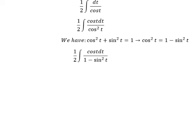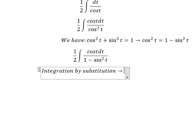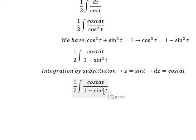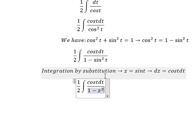Now we can use integration by substitution. We have z equal to sin t, dz equal to cos t dt. So sin squared t will change to z to the power of 2. Cos t dt we change to dz.